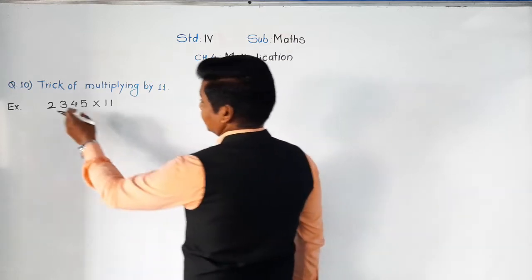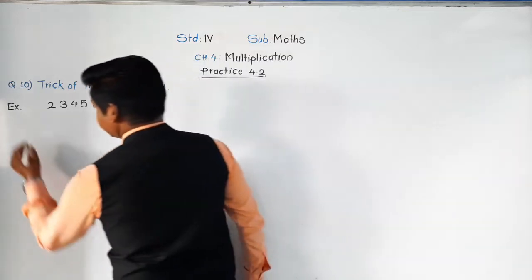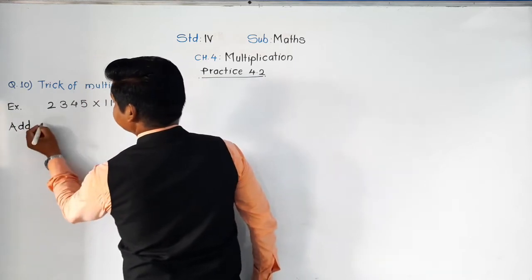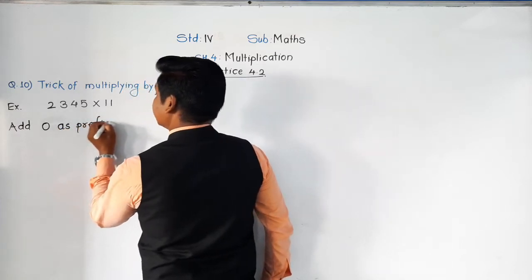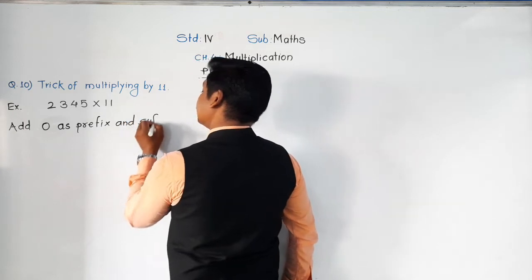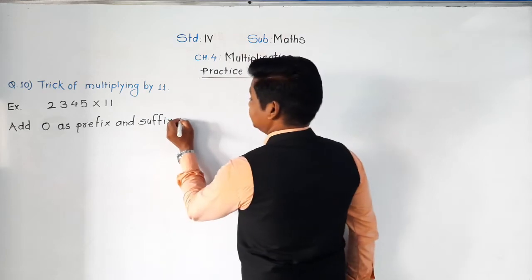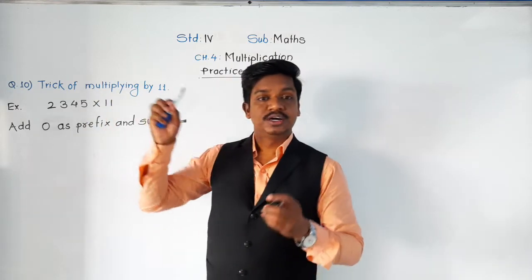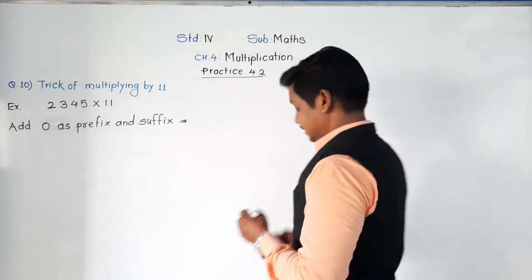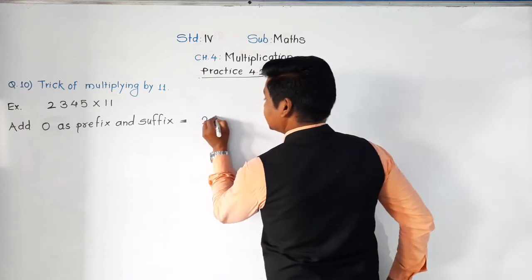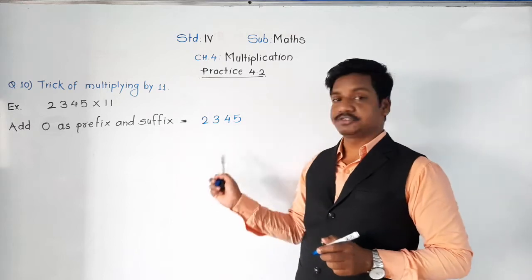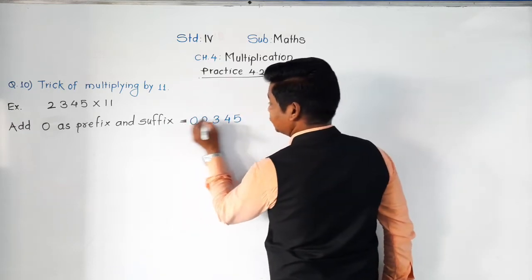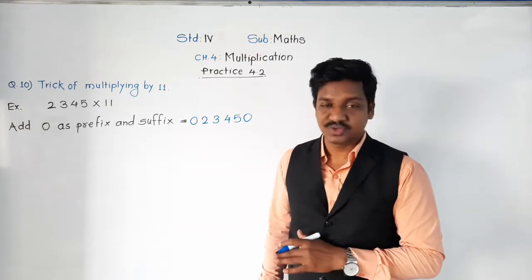Our example is 2345 into 11. What we have to do first is add 0 as a prefix and suffix. Prefix means before and suffix means after. So we have to add 0 at the starting and at the end of the given number. So 2345 becomes 023450.